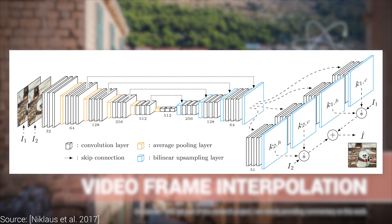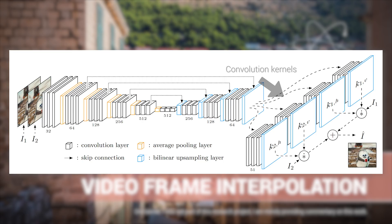This technique uses a convolutional neural network to accomplish something similar, but in the end it doesn't give us an image, but a set of convolution kernels. This is a transformation that is applied to the previous and the next frame to produce an intermediate image. It is not the image itself, but the recipe of how to produce it, if you will.